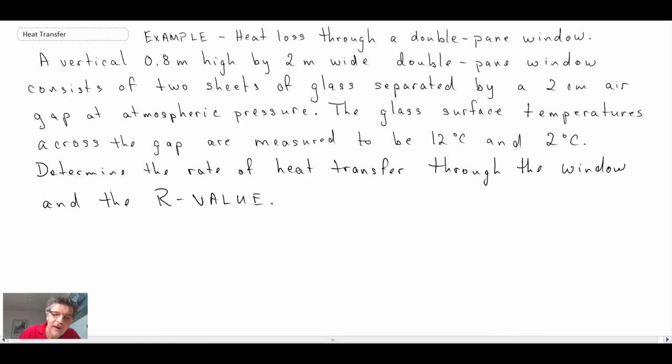So there's our problem statement. What we have is a window that is 0.8 meters high, it's double pane, and we have two temperatures that we know. We know a temperature on one side and the other, and we're looking to determine the heat transfer through the window, and we're also looking for the R value.